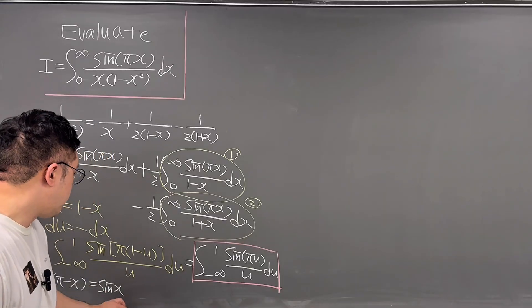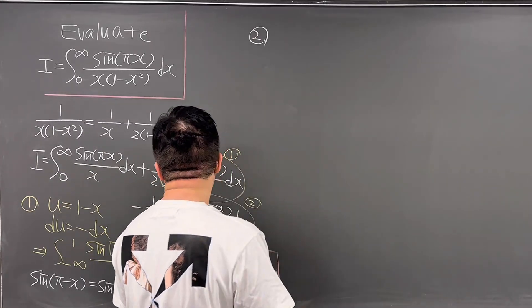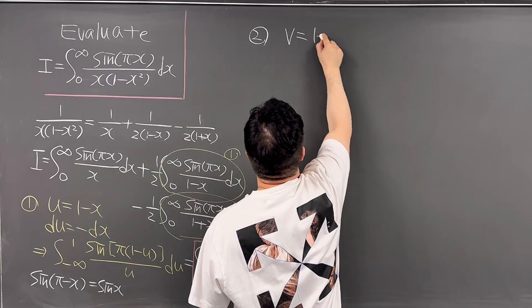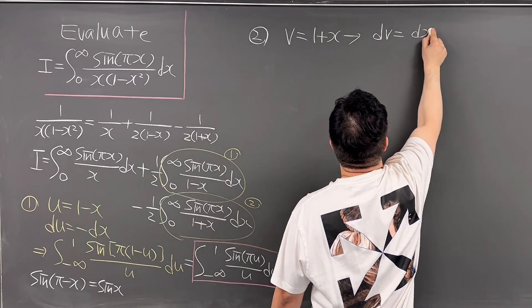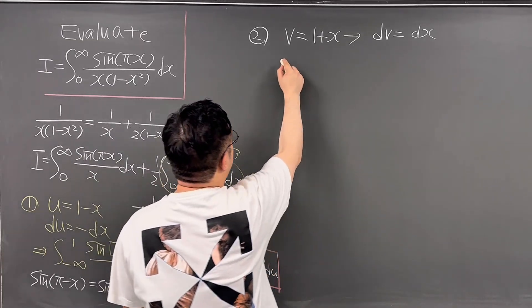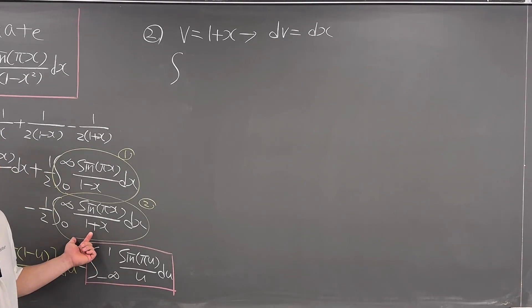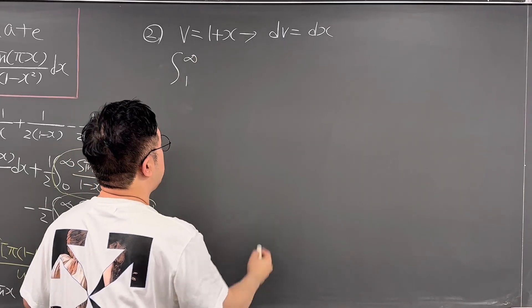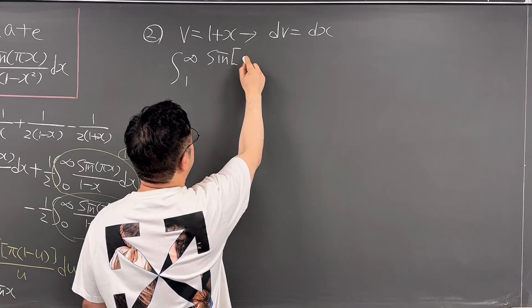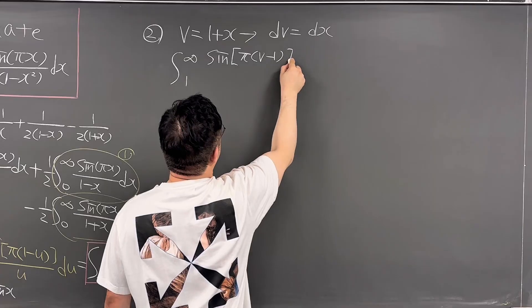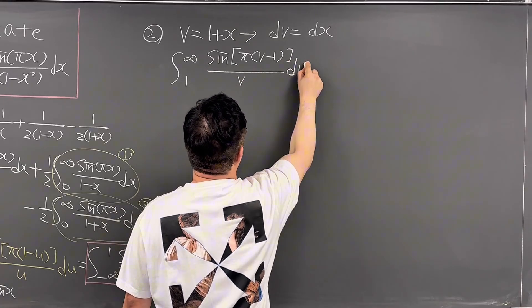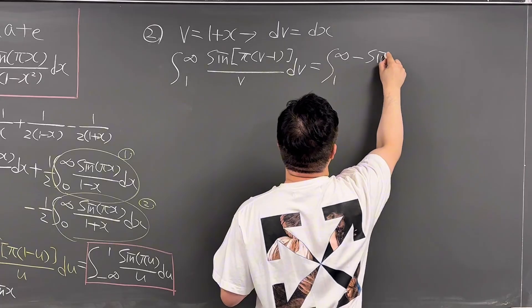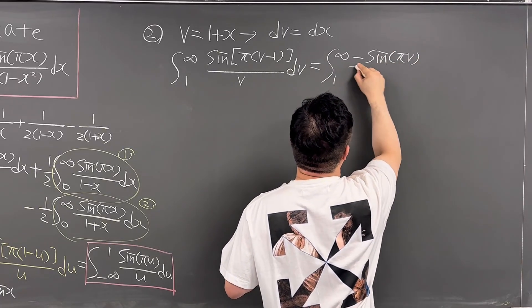For integral 2, I'll use v-substitution: let v equal 1 plus x, then dv equals dx. Only the lower bound changes to 1, so the integral becomes the integral from 1 to infinity of sine(π(v minus 1))/v dv. Using the sine property, this simplifies to the integral from 1 to infinity of negative sine(πv)/v dv.